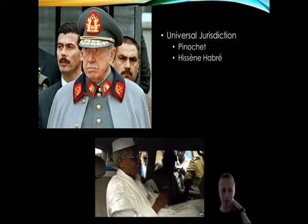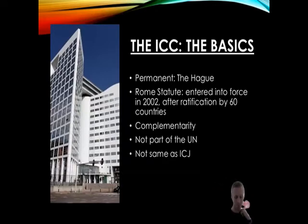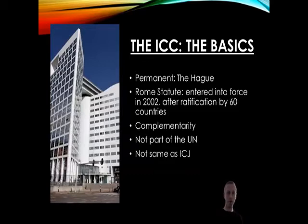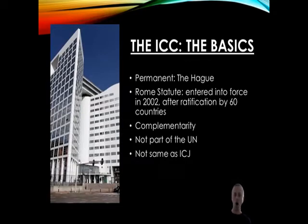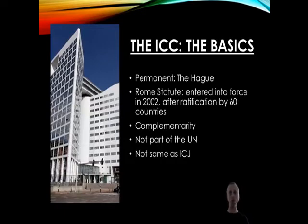Let's now turn to the ICC itself. Unlike the ICTY, ICTR, and Special Court for Sierra Leone, the ICC is permanent — it is the first permanent court for international crimes. It is also based in The Hague. It was established by the Rome Statute at a conference in Rome in 1998 and entered into force in 2002 after receiving 60 ratifications by countries. It's important to note that the ICC operates on the basis of complementarity.